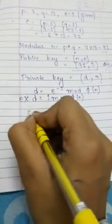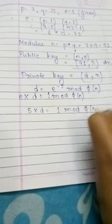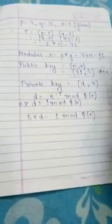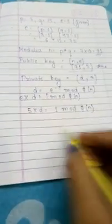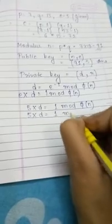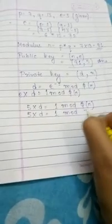So now 5 into D equals 1 mod φ(N), and the value of φ(N) here is 72. The value of φ(N) is 72, so we will write 1 mod 72.